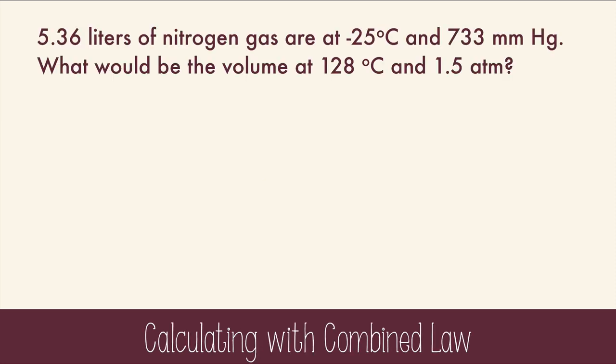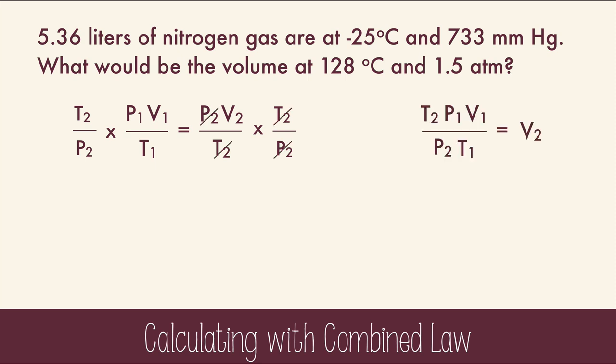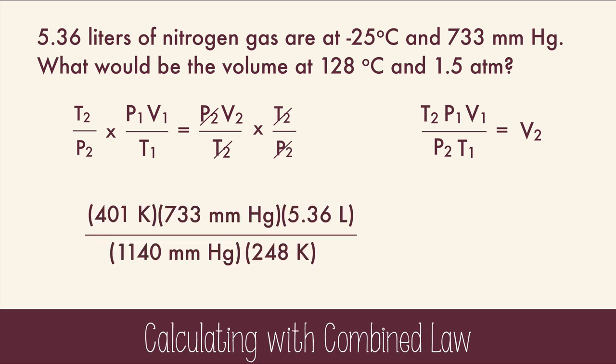5.36 liters of nitrogen gas are at negative 25 degrees Celsius and 733 millimeters mercury. What would be the volume at 128 degrees Celsius and one and a half atmospheres? We're trying to find final volume, so let's rearrange this equation to get the V2 alone. We just have to multiply both sides by T2 over P2. And when we do that, we get this pretty equation. Now we can plug in the data, being sure to turn Celsius into Kelvin, have the same type of pressure units, and calculate. I chose to turn atmospheres into millimeters of mercury. The final volume in this case is 5.57 liters.